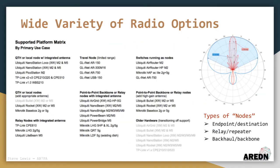There really is a wide variety of radio options for many different use cases. Some nodes are small, indoor-only devices that provide both Ethernet and standard Wi-Fi hotspot coverage, as well as mesh RF coverage out to a limited distance. Other radios are intended to provide mesh RF coverage to a 90- or 120-degree sector of devices at a longer distance.